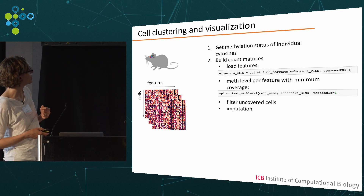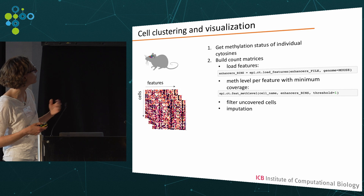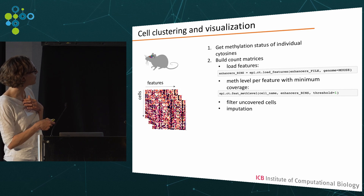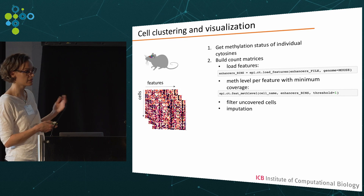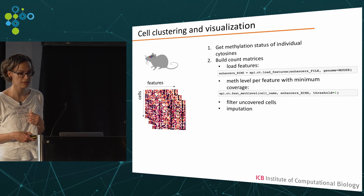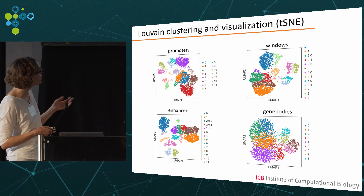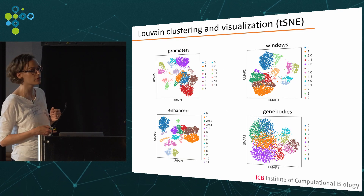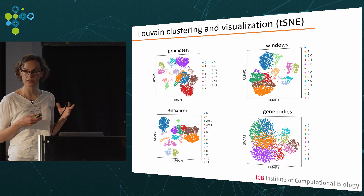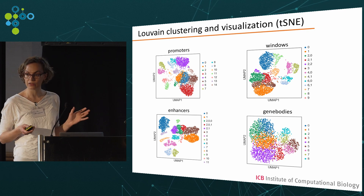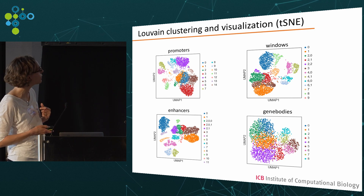We then do low dimensional data representation: PCA, t-SNE, UMAP, et cetera. We can also do Louvain clustering, showing the same plot with clusters assigned to different cell types. We can do that for windows, promoters, enhancers, and gene bodies. Interestingly, we see that the clustering looks more or less tight depending on the features used, which we think is interesting from a biological point of view.